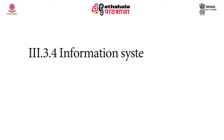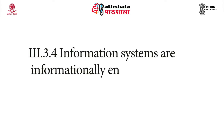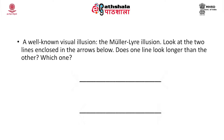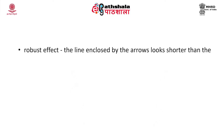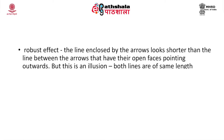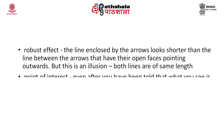Moving on: information systems are informationally encapsulated. A well-known visual illusion is the Müller-Lyer illusion. Look at the two lines enclosed by arrows on your screen. Does one line look longer than the other? A robust effect is seen across people: the first line enclosed by arrows opening outward seems longer than the second line with arrows pointing inward. But this is an illusion — both lines are of the same length.